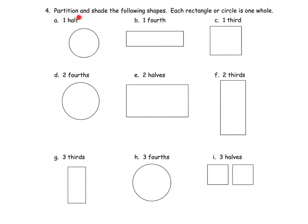Then it says partition and shade the following shapes — each rectangle or circle is one whole. It says shade in one half. So we're going to cut it in half and we have a choice of all the different directions we could draw our line, then shade in half — right there. Then it says one fourth. We have a couple of choices. So I'm going to do one fourth like this — there's my four pieces — and I'm going to shade in one fourth. The idea is cut it into whatever fraction it says, then shade in.